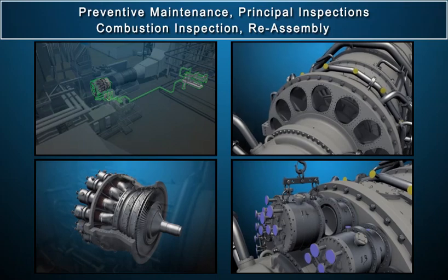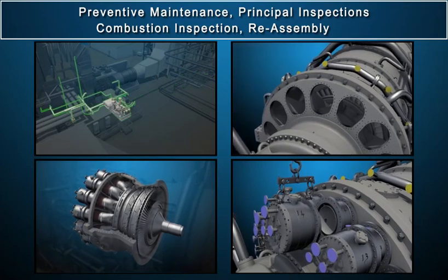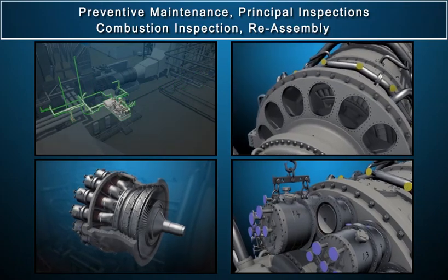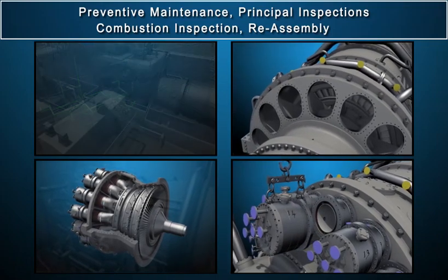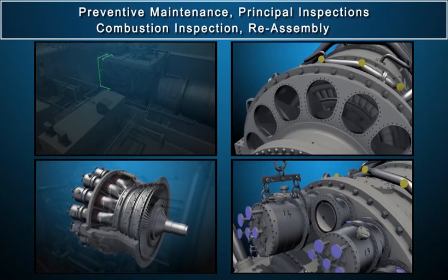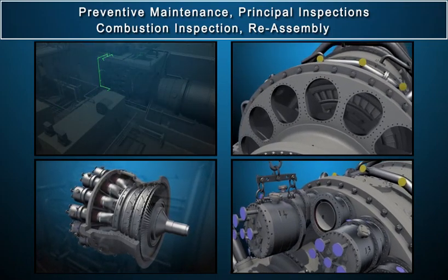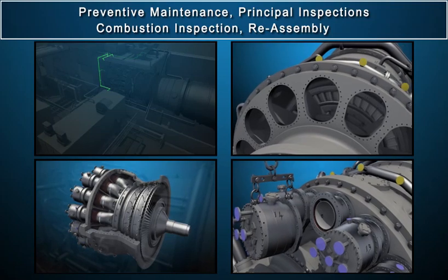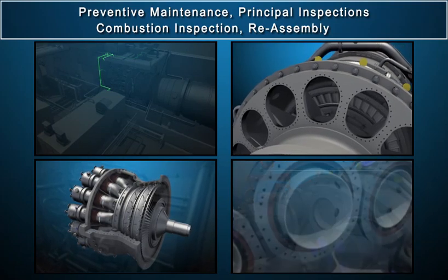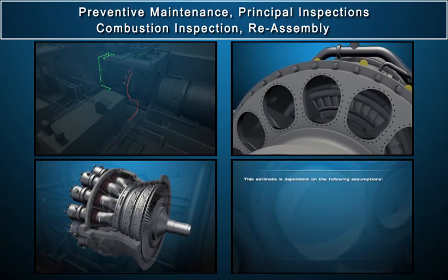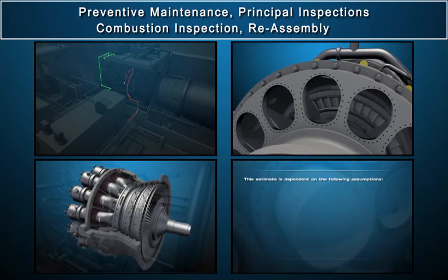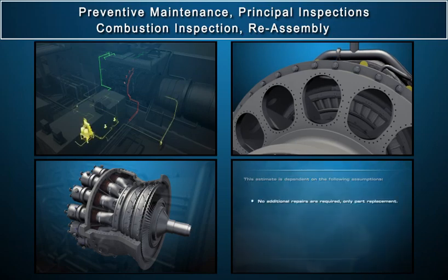In the final section of the course, Gas Turbine Routine Maintenance, the following chapters are covered: Preventive Maintenance, Principal Inspections, Combustion Inspection, and Reassembly.